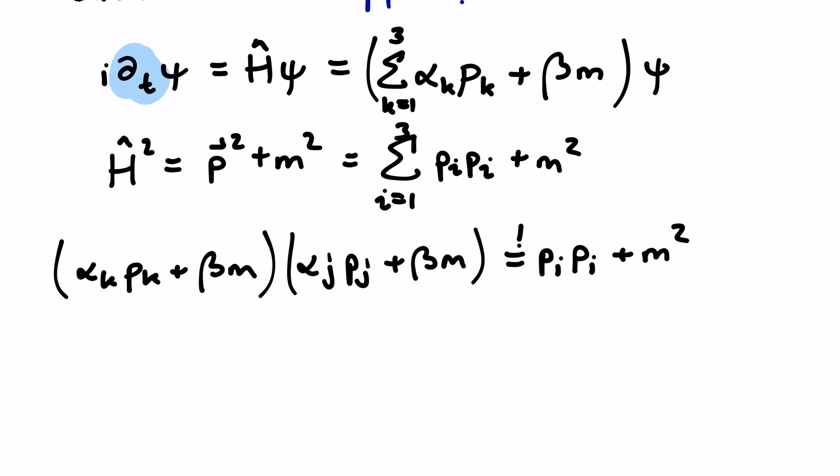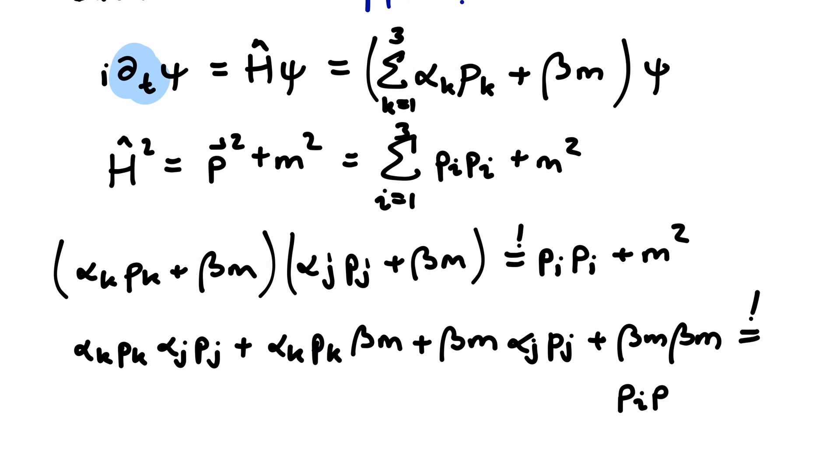First, we left out the sum sign in these terms following Einstein's summation convention. And secondly, we chose a different index in the second term, j instead of k, to avoid any ambiguity. If we multiply these terms and keep their relative orderings, we end up with something like this.